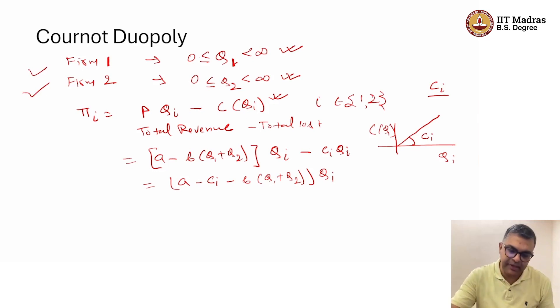We will assume that marginal cost, or the cost to produce one unit, is CI for firm I. So total cost increases linearly as QI increases, and this slope is given by CI for firm I. This can be written as A minus CI minus B times Q1 plus Q2 multiplied by QI.